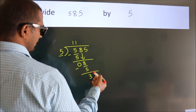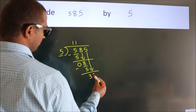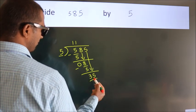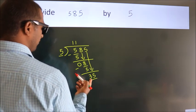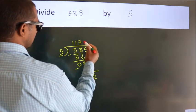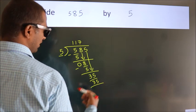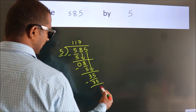After this, bring down the beside number. So, 5 down, so 35. When do we get 35? In 5 table, 5 sevens, 35. Now, we subtract. We get 0.